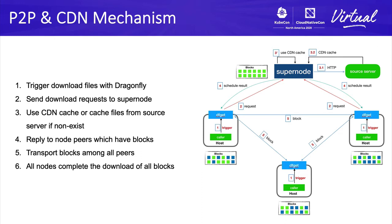If all nodes other than the supernode don't have any blocks of the file, the supernode will act as a peer node and provide blocks for other peers to download. The scheduling result will not contain all blocks at once — by default it contains only 4. After dfget gets the scheduling result, it downloads the corresponding blocks from peers. After downloading a block, dfget reports to the supernode that it has downloaded a block, and then provides the ability to upload that block to other peers. This process repeats until all nodes have downloaded the entire file content.